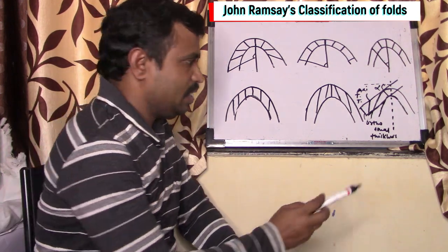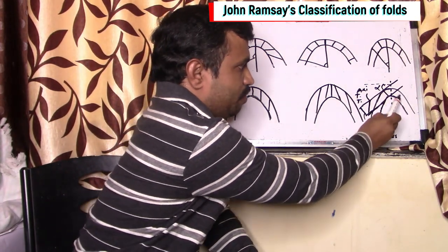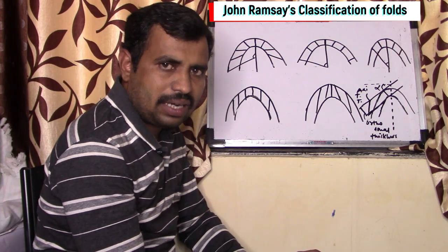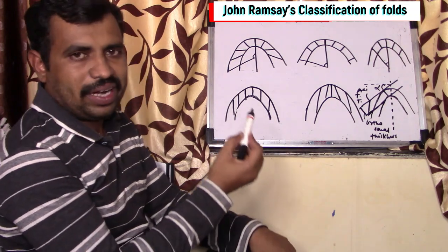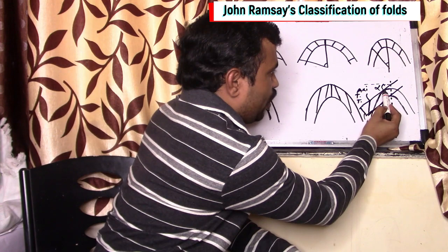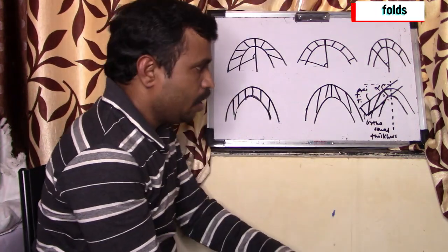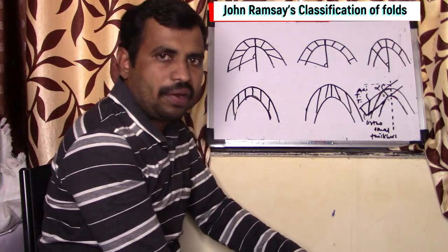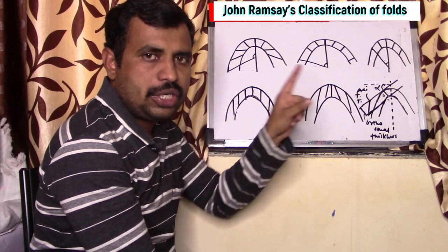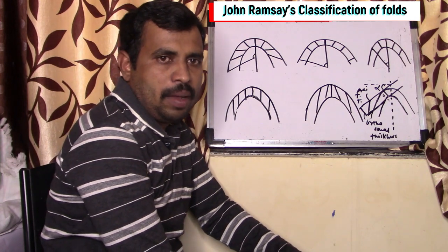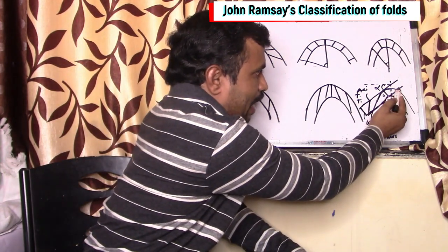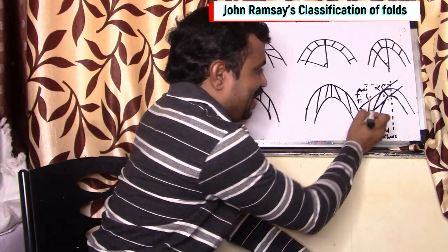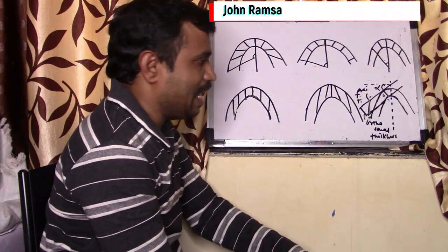What is a dip isogon? See in this figure — this is the fold, this is the folded layer, and this is the dotted line which divides this fold into two equal parts, called the axial surface trace. When we take two points, point A and point B, which have the same dip direction or angle of inclination to the horizontal, and when we join these two points by drawing tangents — tangent 1 and tangent 2 — to the surface of the folded layer, when we join these two points, that gives points C and D, and the thickness between C and D is called the axial trace thickness.